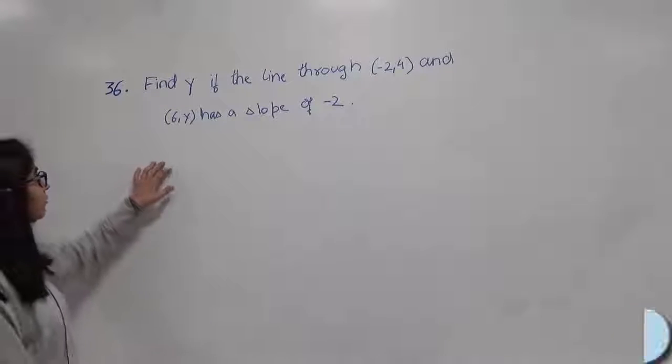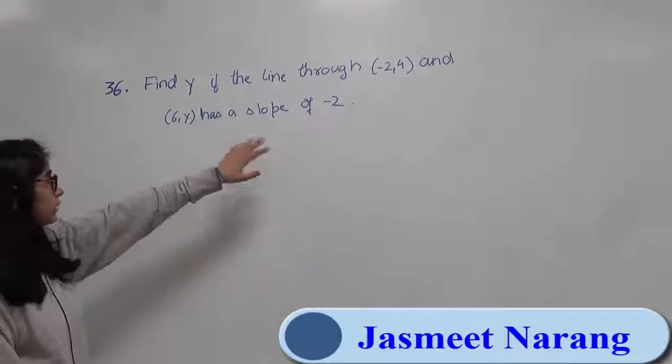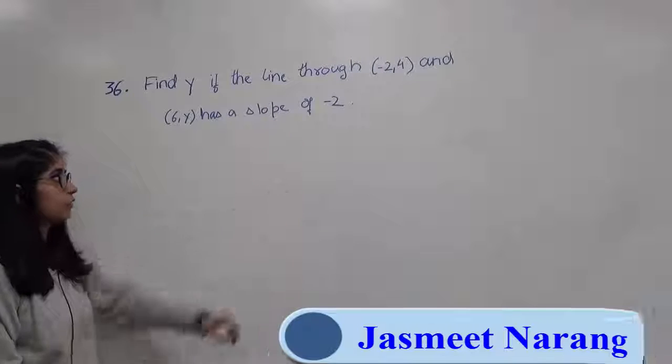Question 36. Find y if the line through this point has a slope of negative 2.